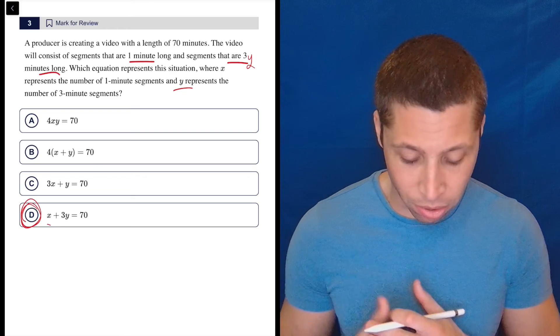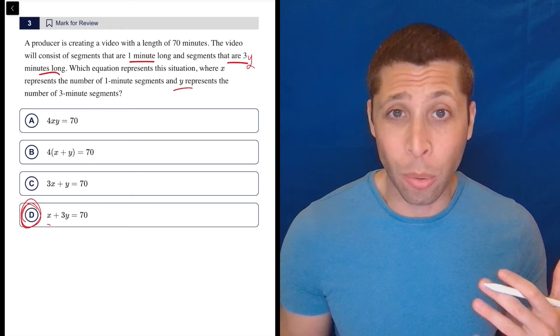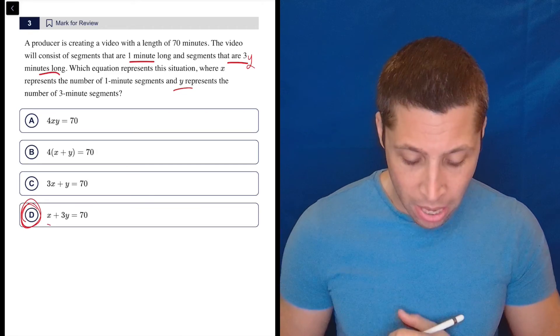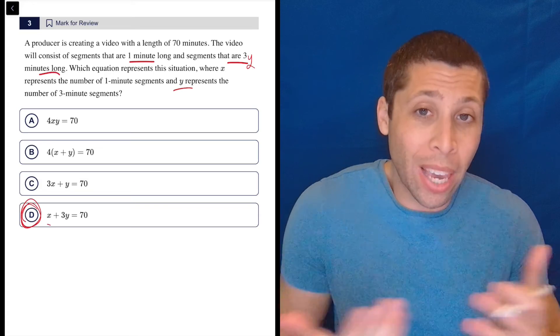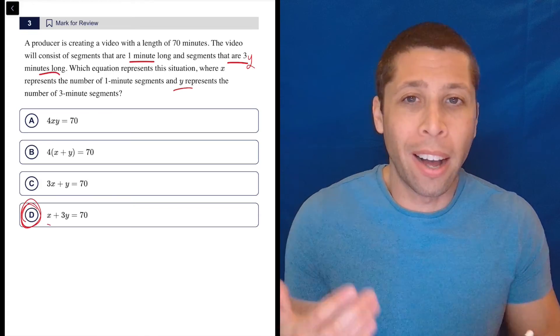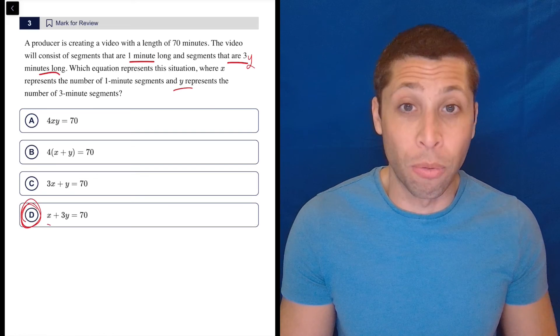But if you think about any of these other answer choices, they just don't matter. We're not going to multiply the number of things, so that gets rid of A. C has got, obviously you're just misreading the question and applying the wrong rates to the variables. And B, you can't add them up. They're not going to be the same number of a three minute and one minute video, so it's not going to balance out so that we could just do four.